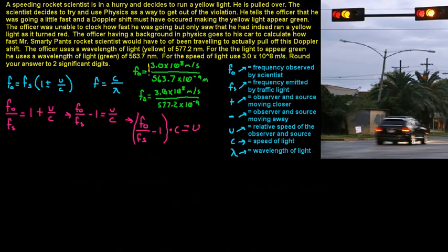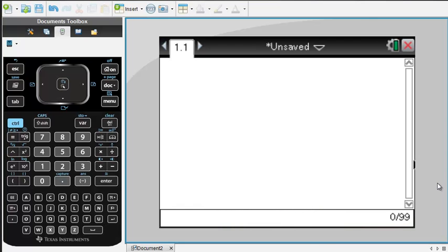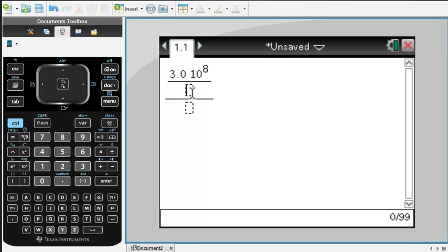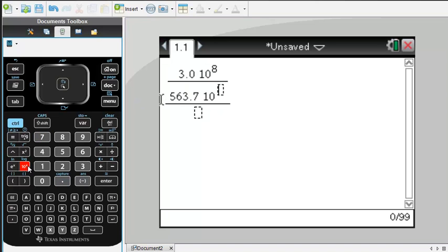And so remember, for f_o we are going to be taking this whole thing right here, and that is going to go right here. And then for f_s, that is going to go right here. So I am going to turn to the calculator to do this. Okay, so we have got f_o, which is 3.0 times 10 to the 8th meters per second divided by 563.7 nanometers, so to the negative 9th.